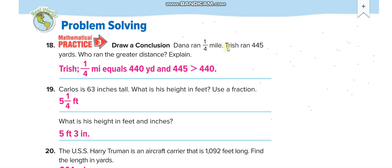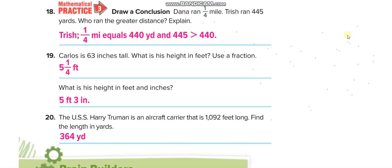This 1/4 is a quarter mile, so if we divide 1760 by 4 you will get 440 yards. So it means 445 yards are more, so Trish ran more. Carlos is 63 inches tall. What is his height in feet?